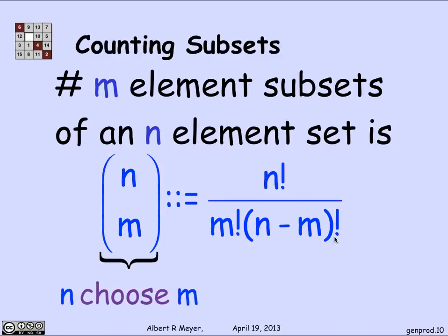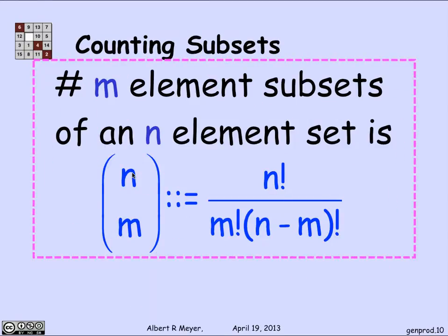And again, that notation, the binomial coefficient is called N over M is N choose M. And this is an absolutely fundamental formula that you need to remember, because we will be using it constantly and repeatedly.